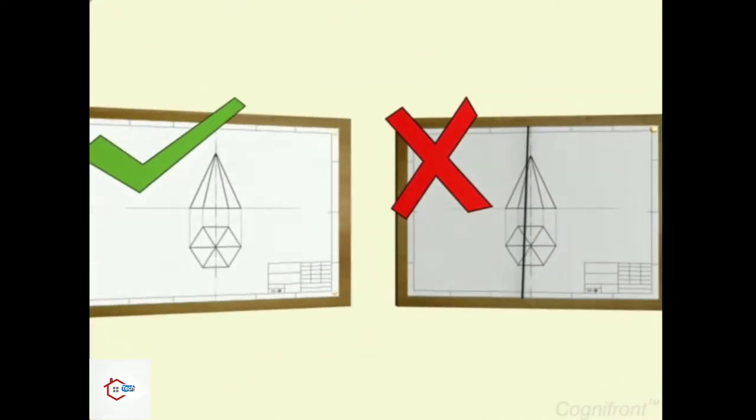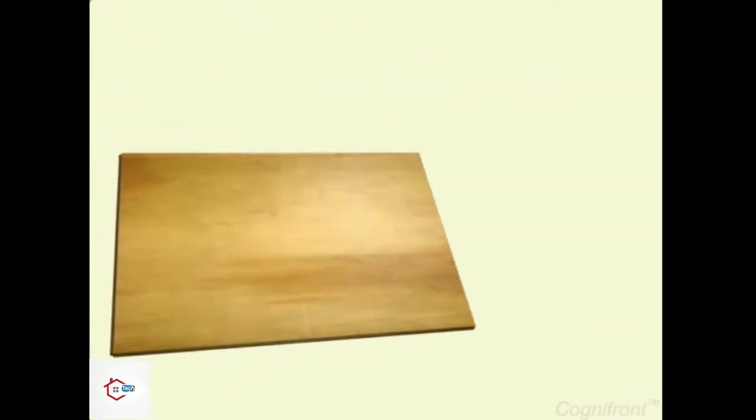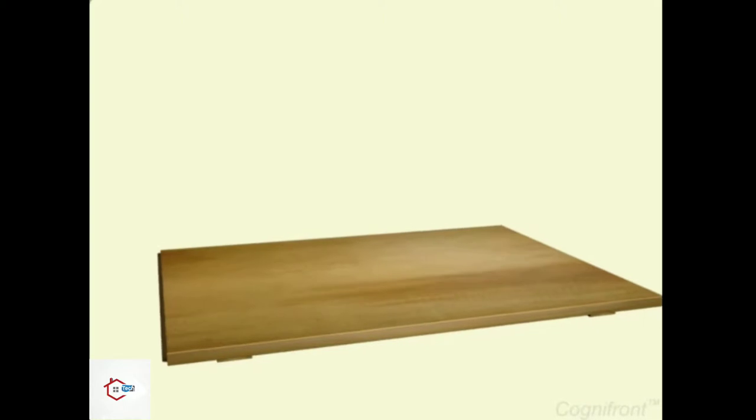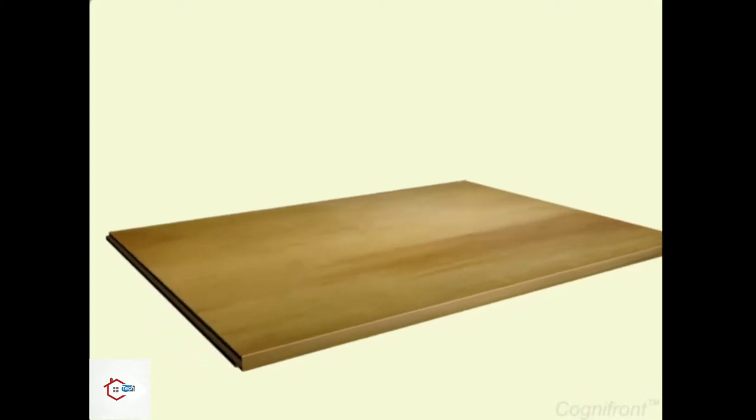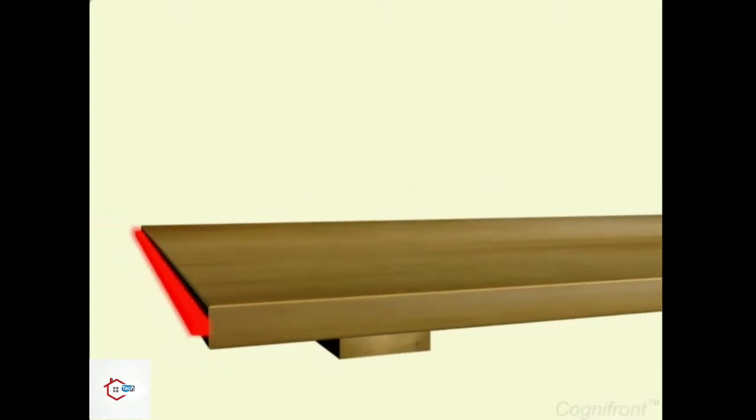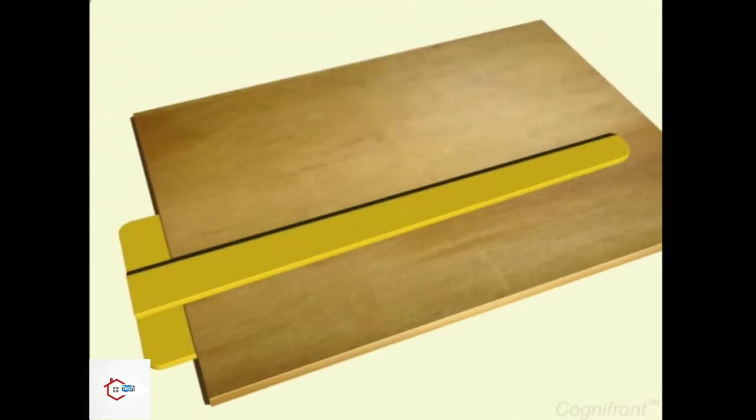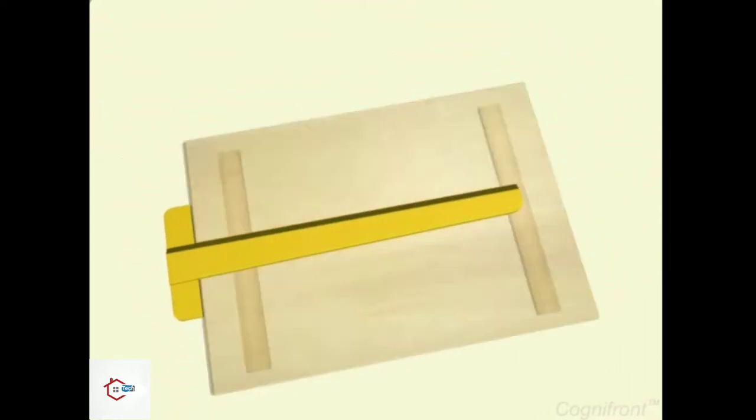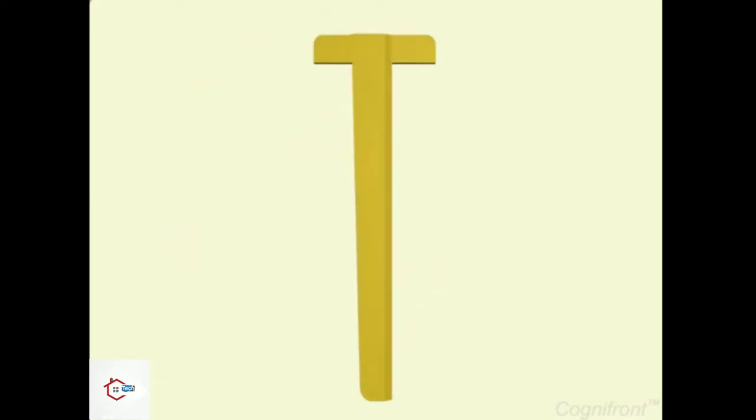The drawing board is a plain and smooth surface used for drawing purposes. The ebonite edge of the drawing board facilitates smooth movement of T-square. The T-square, as the name suggests, is a T-shaped drawing tool.